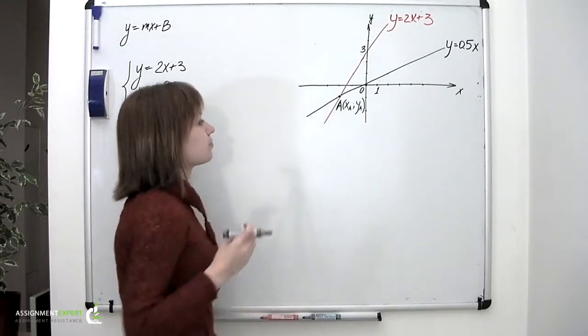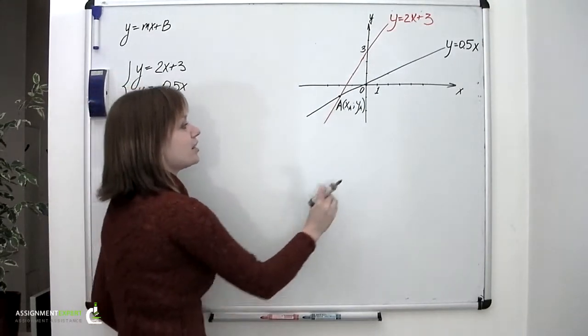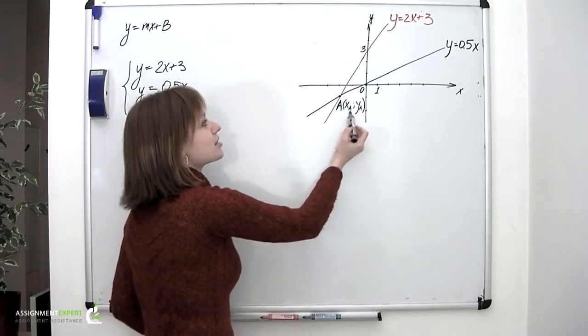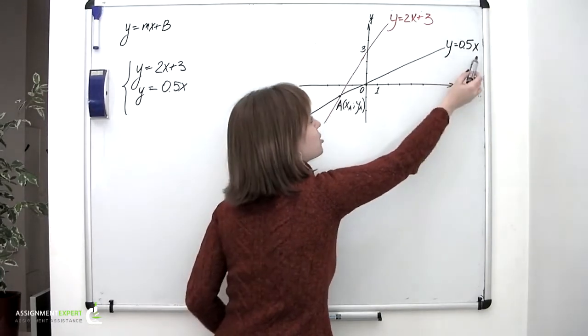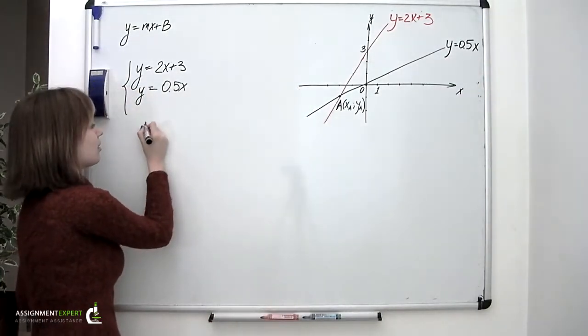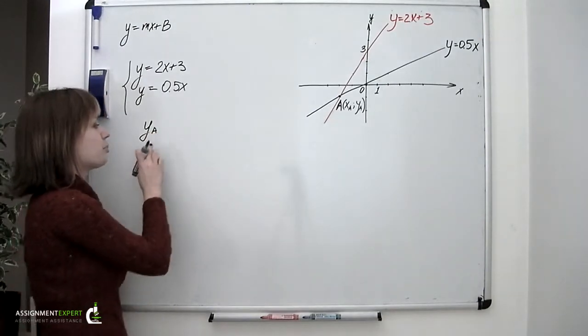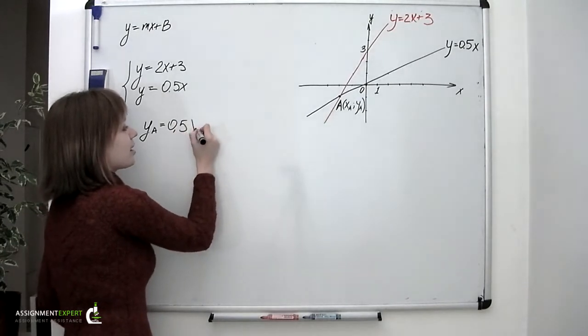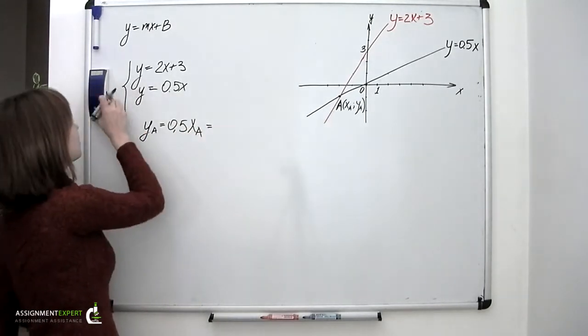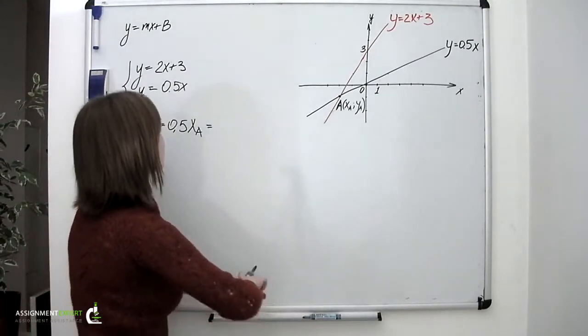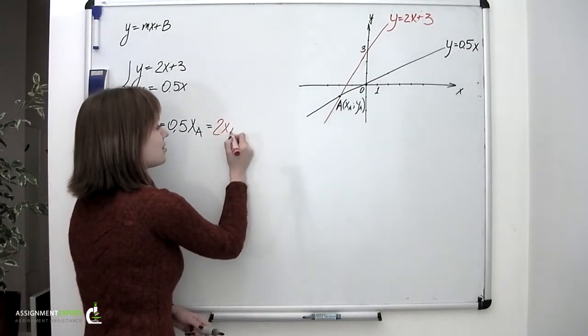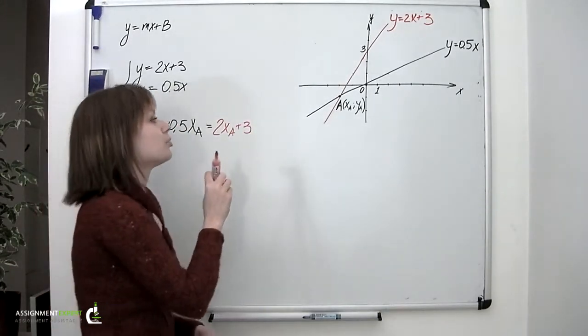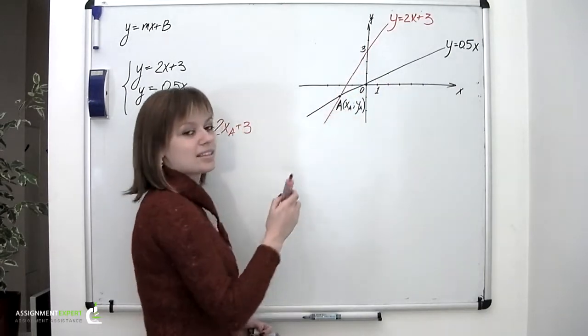And the thing about this point is that in order to find its y coordinates, you could substitute its x coordinates into either this equation or this equation. Look, y coordinates of the point A equals 0.5x and to 2x plus 3 because this point, this is the one particular point which lies on both lines at the same time.